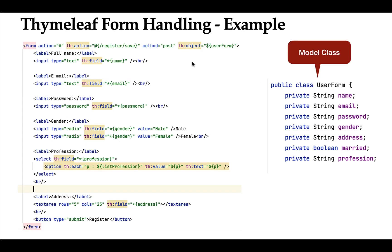Next we have the th:field attribute. This attribute is used to point to the field name of the model object. For example, here we are using th:field to point to the 'name' attribute of the userForm model class. Whenever a user enters data in the name input text field, that data will be stored in the 'name' model class attribute. Similarly, we use th:field to point to the 'email' field, and whenever a user enters their email, that value is stored in the email model class attribute.